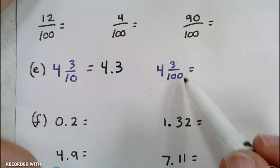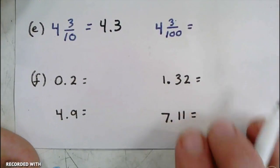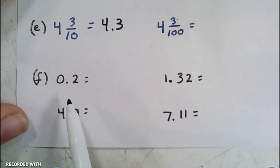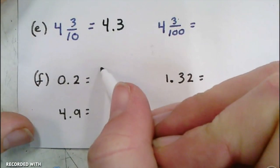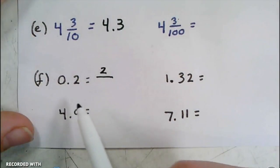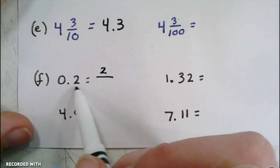hundredths, so my 3 needs to end in the hundredths place. It also might tell you to take a decimal and turn it into a fraction. So if I had to write this number as a fraction, I would write the 2 as my numerator, and my denominator is going to be the place value that this is at. So this is in the tenths